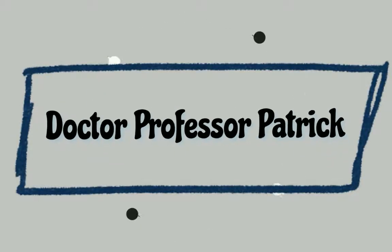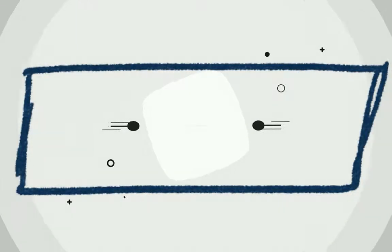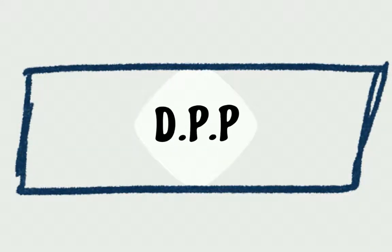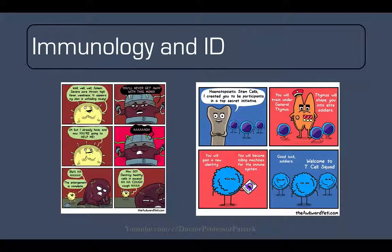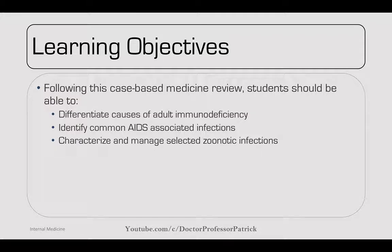I am Professor Patrick. Welcome back. We're going to finish things off with immunology, dermatology, and ENT. Some of the learning objectives here are to differentiate the causes of adult immunodeficiency, to identify common AIDS-associated infections, and to characterize and manage some selected zoonotic infections.